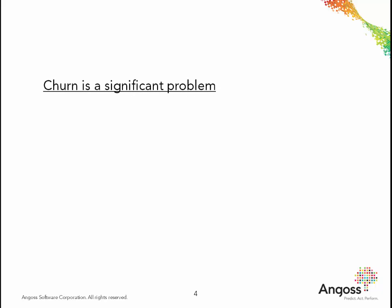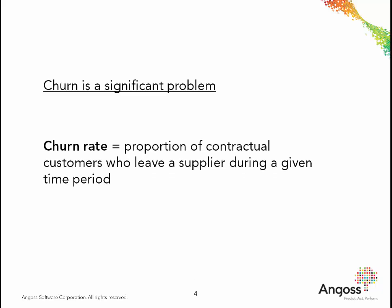Loss of customer, attrition, defection, or as it has become more commonly known as churn, is a significant problem for businesses. The churn rate refers to the proportion of contractual customers or subscribers who leave a supplier during a given time period.